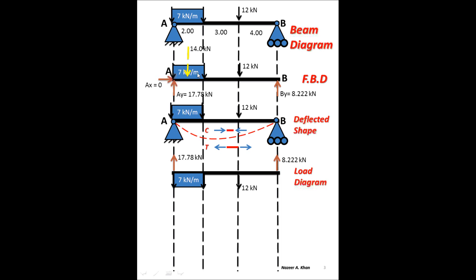We have the reaction Ay acting up, placed above the datum. The uniformly distributed load (UDL) across that area is a negative load acting down, so it's placed below the datum. The point load is also acting down, placed below. The final reaction By is acting up. I've replaced the labels with actual magnitude values, so I don't need to maintain the labels. That's all there is to a load diagram. We went from the beam diagram to the free body diagram, then to the load diagram.